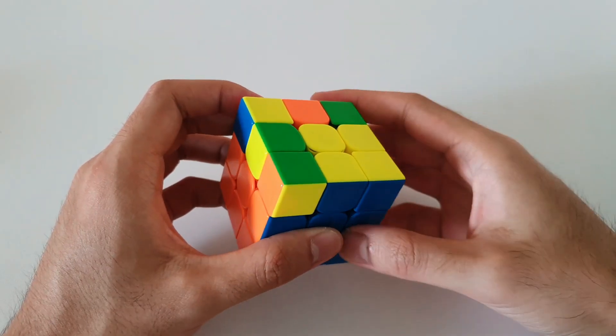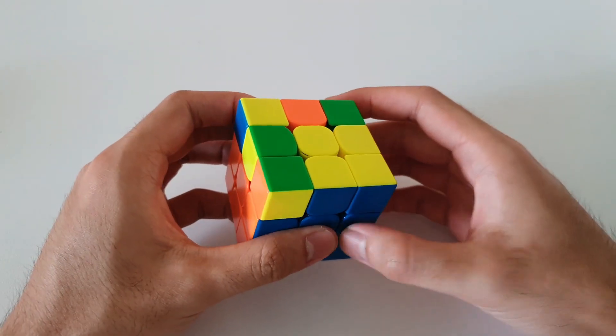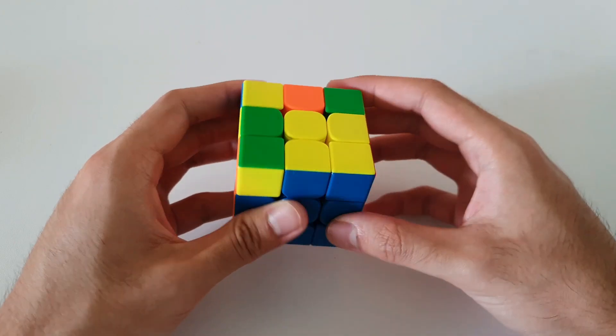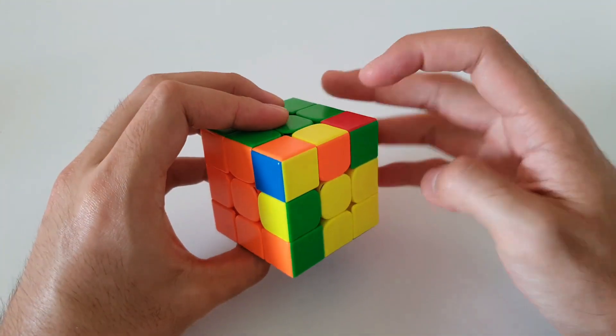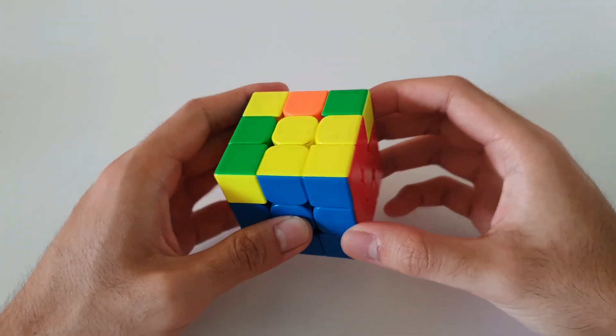The final OLL case I'll be going through in this video would be this one here. So similar to the previous case, it's also got that additional corner that's oriented. But the big difference is that there are no 2x1 bars, or any bars for that matter, around the side.